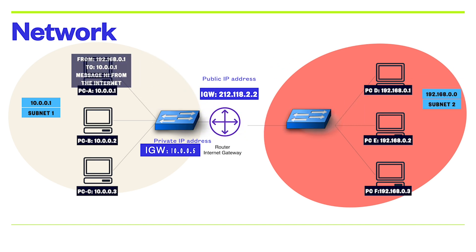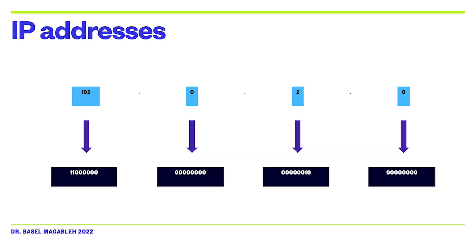Each client machine in a network must have a unique Internet Protocol address that identifies it. An IP address is a numerical label in decimal format; machines convert that decimal number to binary. For example, the IP address 192.0.2.0 consists of four dot-separated numbers, each representing 8 bits, meaning each number can be anything from 0 to 255.